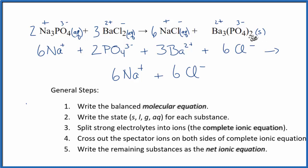We don't break up solids in net ionic equations. So we just write Ba3(PO4)2. We have 2 of those PO4s there. And that's a solid, so we're not going to break that apart in our net ionic equation. So that gives us the complete ionic equation.